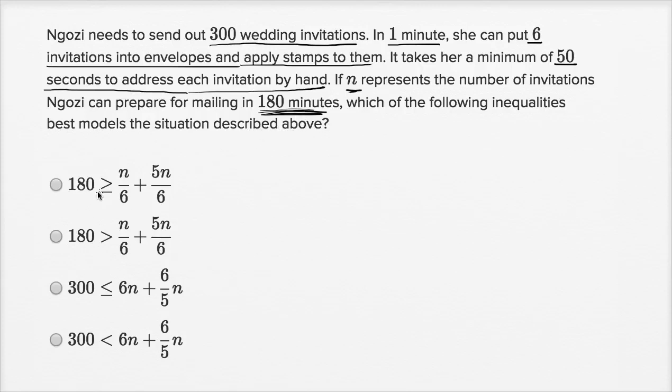Over here, you have 180 greater than or equal to something in terms of N. This is 300 less than or equal to, this is 300 less than. Now remember what our constraint is here - how many can she prepare in 180 minutes.